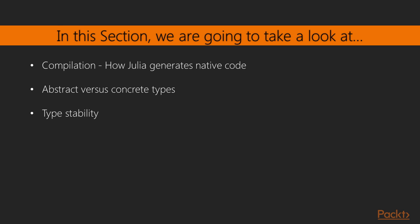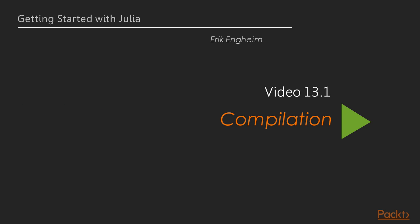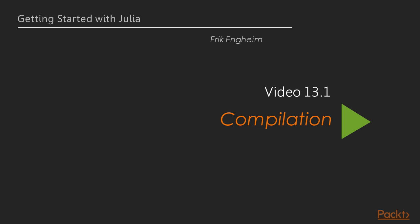In this first part we're going to look at compilation — what the Julia just-in-time compiler does when it generates native machine code. Then in the next video we'll look at abstract and concrete types and their relation to performance, and finally the last video will be about type stability, which you really need to understand to avoid poor performance.